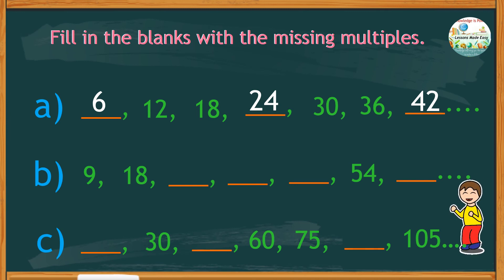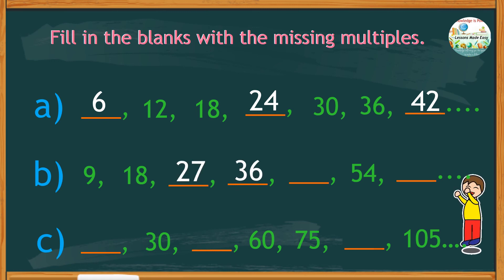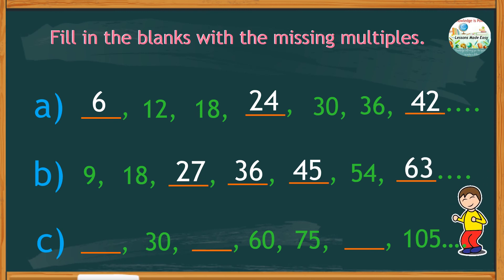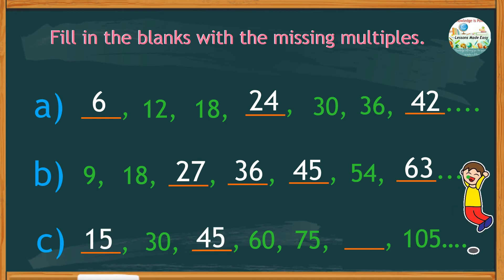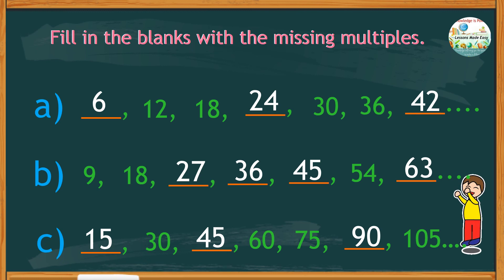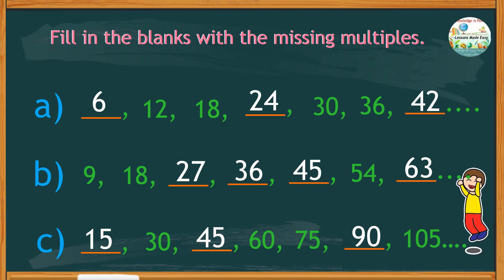For set B, the missing multiples are 27, 36, 45, and 63. This set shows the multiples of 9. And finally, set C — the missing multiples are 15, 45, and 90. So there you go! It is pretty easy to distinguish factors from multiples. I believe you are able to identify all the missing factors and multiples.